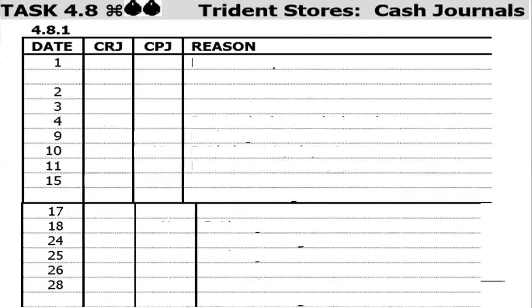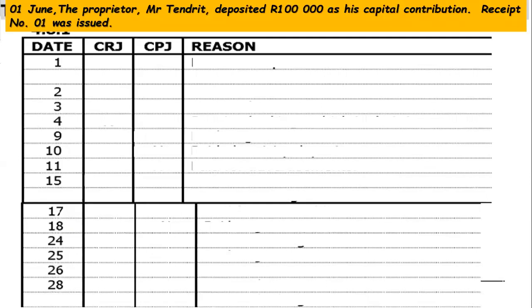The first transaction is on June 1st, where the proprietor Mr. Tenrit deposited 100,000 rands as his capital contribution and was issued receipt number one. Because money was received, it is entered in the Cash Receipt Journal. The second transaction on that same date: Mr. Tenrit also negotiated a loan for 50,000 rands at 16% per annum with First Bank and received the proceeds of the loan on this day — so again it's in the Cash Receipt Journal.